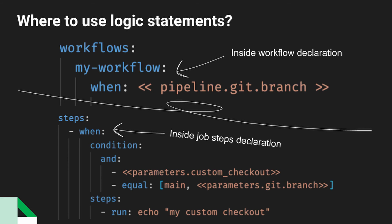So we have two examples here. We have the top example, which is the workflows section. In your workflow, you can supply a key called when, and that will allow you to enter in one of the logic keys to create an advanced logic trigger. Then we have the bottom example, which is inside of a job declaration within the step section. We have a step called when, and this when step also has two keys you need to supply it. The first one is the condition — that is where you will actually supply the logic keys and values — and then you have a steps section where you can define steps that will occur if those logic conditions are met.